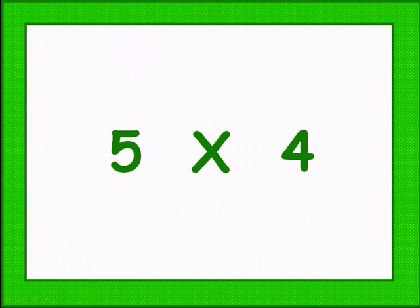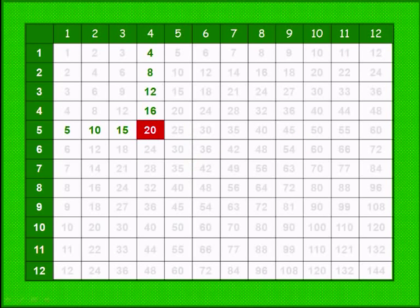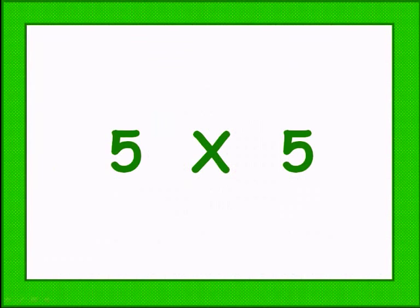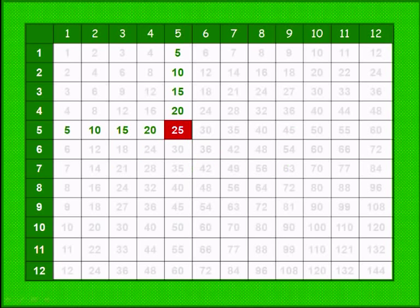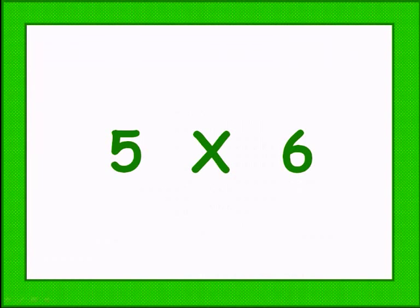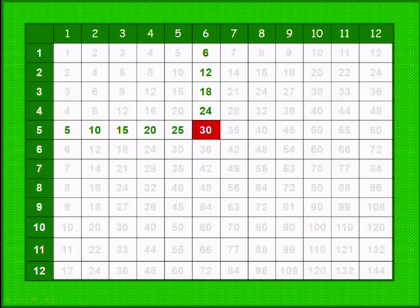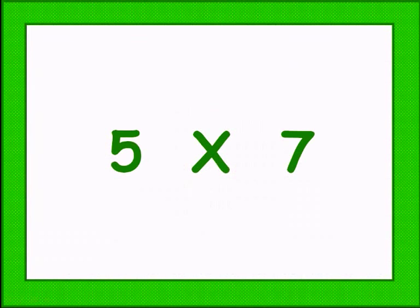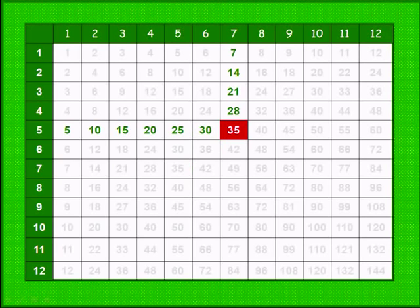Adding 5, 5 times 4 gives 20. Adding 5, 5 times 5 gives 25. Adding 5, 5 times 6 gives 30. Adding 5, 5 times 7 gives 35.